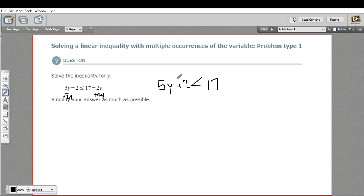Now we've got our y term here, and this number term. I need to subtract 2 to get rid of that number term from that side. So this is 5y now on this side. Less than or equal to, and 17 minus 2 is 15.